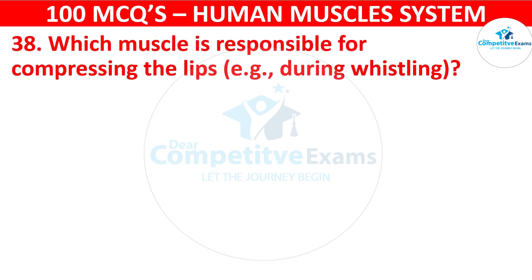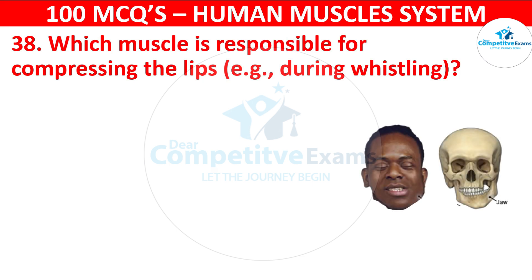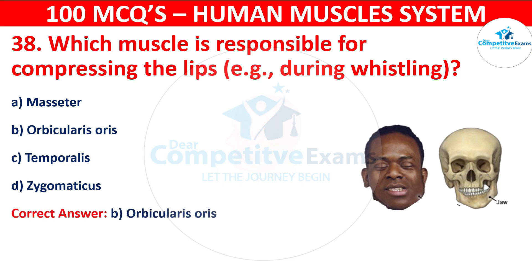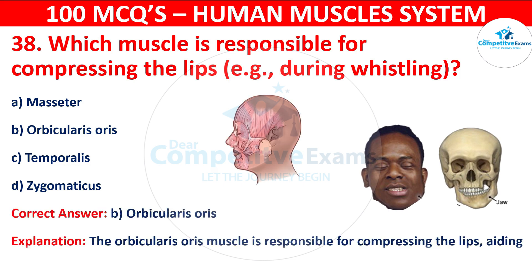Question 38. Which muscle is responsible for compressing the lips, e.g. during whistling? Your options are Masseter, Orbicularis oris, Temporalis, or Zygomaticus. The correct answer is B, i.e. Orbicularis oris. The orbicularis oris muscle is responsible for compressing the lips, aiding in actions like whistling and puckering.